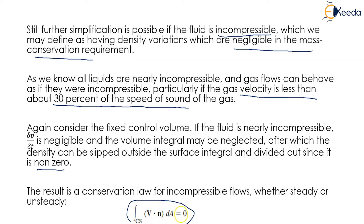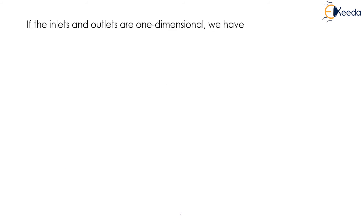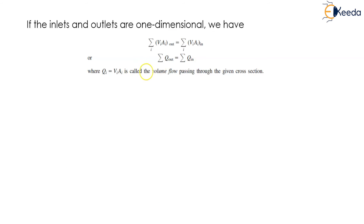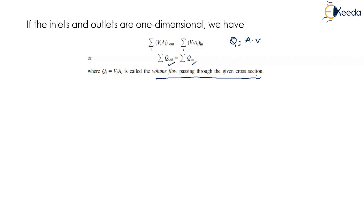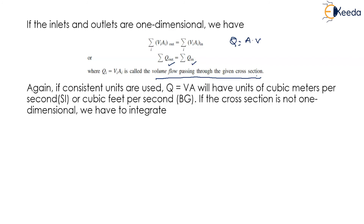If the inlets and outlets are one-dimensional, the summation of V times A for outward flow equals the summation of V times A for inward flow. Discharge Q can be written as A multiplied by V — area multiplied by velocity — so the discharge outwards equals the flow coming inwards. Q equals VA is called the volume flow passing through the given cross section, with units of cubic meters per second or cubic feet per second.